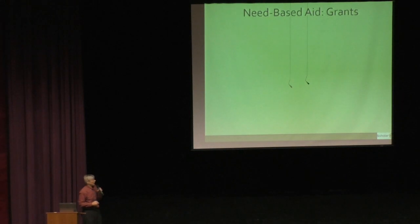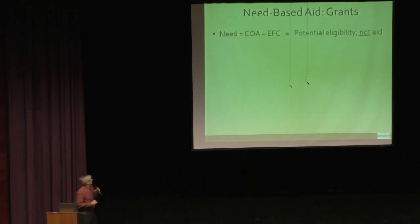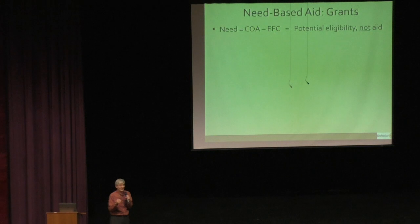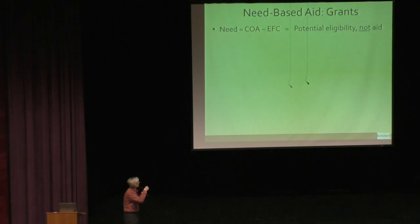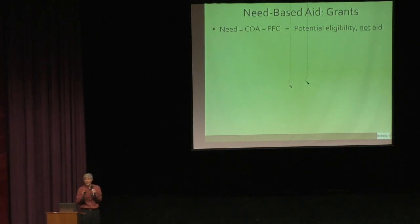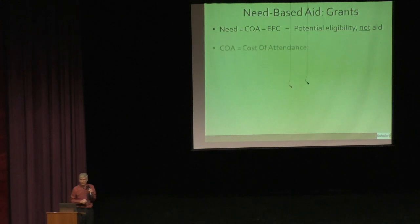Now for the algebra portion of the evening. Need has a specific definition in the financial aid world: COA minus EFC equals your potential eligibility for aid. That's what need is — your potential eligibility, not necessarily how much you might get. Let's break down the algebra.